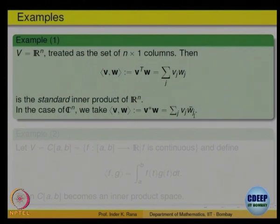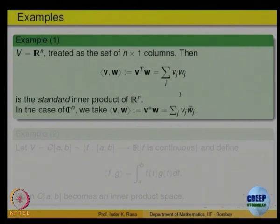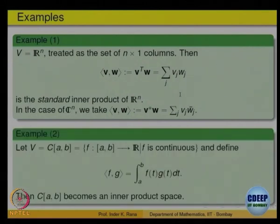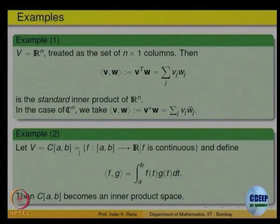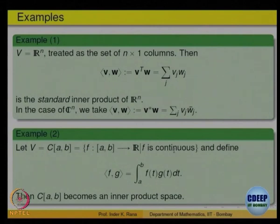Now let us look at an example of an inner product space that is different from Rn — this motivates why the abstract definition is needed. Consider the space C[A,B] of all continuous real-valued functions defined on the interval [A,B]. We can add any two functions: (f + g)(x) = f(x) + g(x) for every x in [A,B].